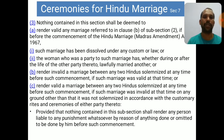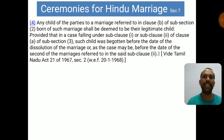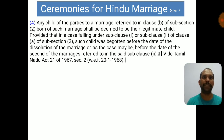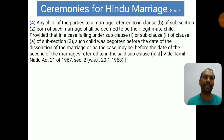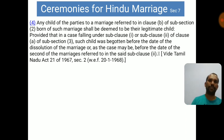The provision also adds that nothing in this sub-section shall render any person liable to punishment by reason of anything done or omitted before such commencement. Any child of the parties to a marriage referred to in clause (a) of sub-section (2) shall be deemed to be their legitimate child, provided that in cases falling under sub-clause (1) or (2) of clause (a) of sub-section (3), such child was begotten before the date of dissolution of the marriage or before the date of the second marriage referred to in that sub-clause — per the Madras Amendment Act 21 of 1967, Section 2.